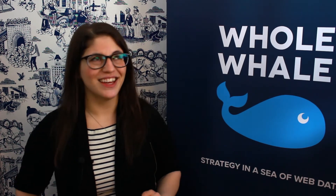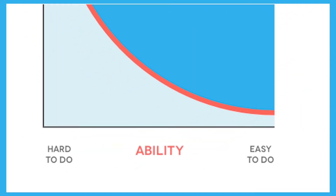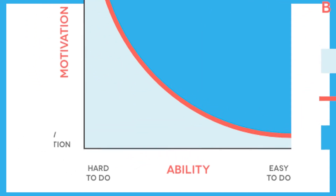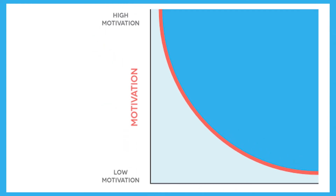Speaking about how it works: Sharethrough uses BJ Fogg's behavioral model, along with around 300 other elements — most of them proprietary from their own work in advertising. In terms of triggers that compel users to take action, we want to look at the ability to act on those triggers as well as the motivation to act on those triggers.